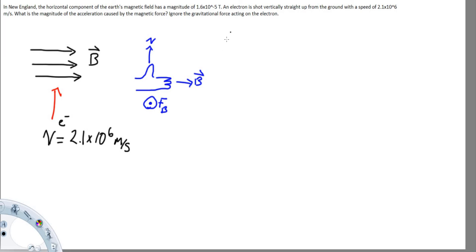So let's write out the equation for the force of the magnetic field. F_B is equal to the charge of the particle times the velocity times the sine of the angle times the magnetic field.